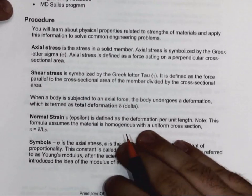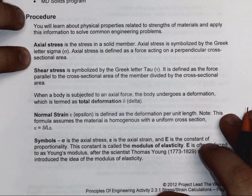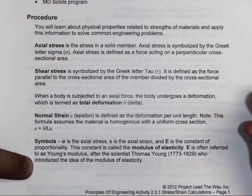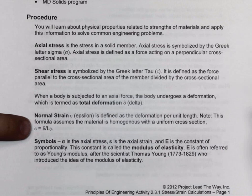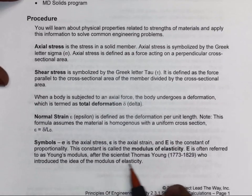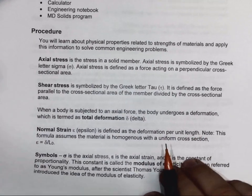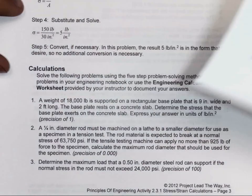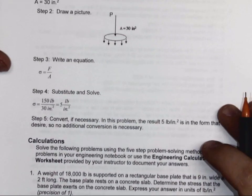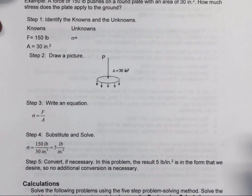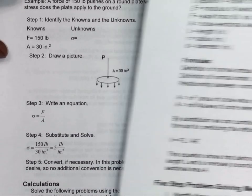Under the procedure, they will describe a lot of things. These are things that you have seen in the PowerPoint already. What is axial stress and shear stress, normal strain, what symbols you are working with. This is stuff we've already talked about, but it's there for your reference. As you go on to the next page, you'll end up seeing page two.